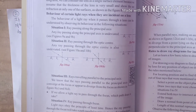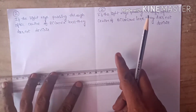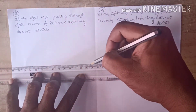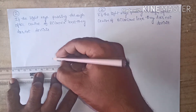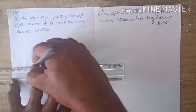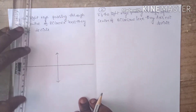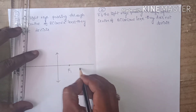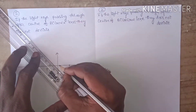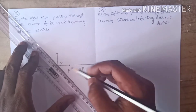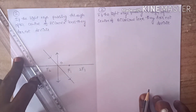Now let us draw the ray diagram for this. Draw a principal axis, identify the midpoint, and mark equidistant points. Draw the biconvex lens at the center — this is f1 and 2f1, and f2 and 2f2. The light rays are traveling through the optic center and are undeviated — they travel without any deviation, meaning they don't undergo the process of either convergence or divergence.